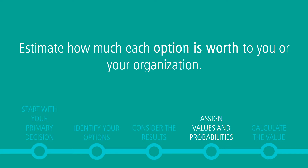Assigning values and probabilities is an optional element of your decision tree. In this area, we estimate how much an option is worth to your organization. This can be a monetary or non-monetary amount. Label the outcome with the value. Next, for each circle, called the uncertainty node, estimate the probability or likelihood of each outcome. The total of each circle must equal 100%. Repeat this for all of your decision nodes.